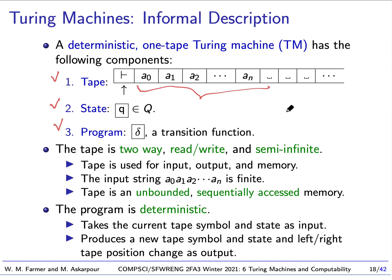Now the program is deterministic. That means if we have a current state and we're looking at a symbol, the transition function will move us left or right, will possibly change the symbol, and we'll move to a new state. That's all it will do.